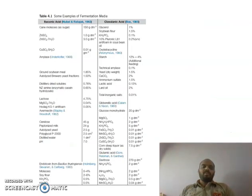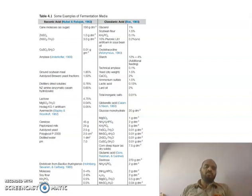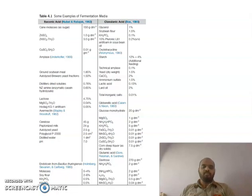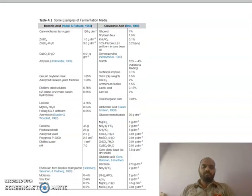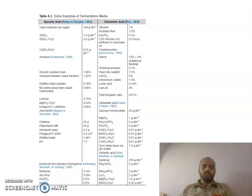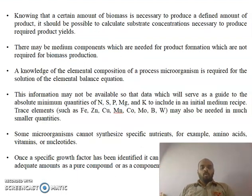Some examples of fermentation media are given here, such as itaconic acid production and enzyme production. This table shows certain examples for fermentation media used in different production processes.